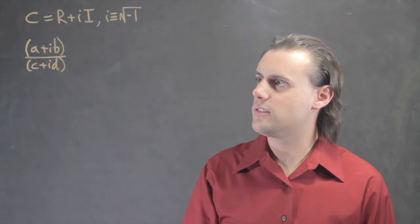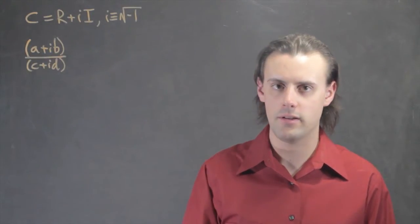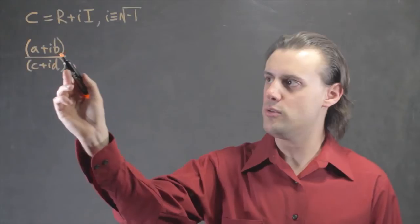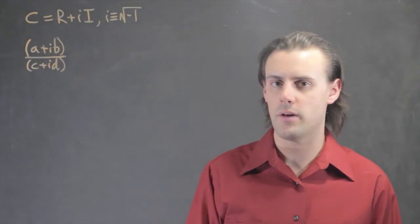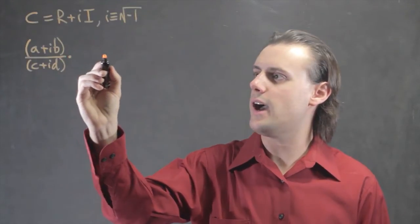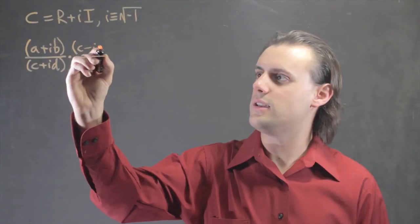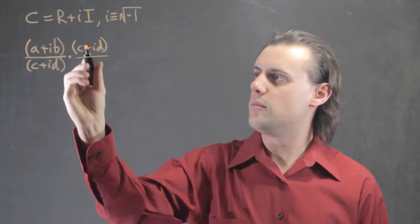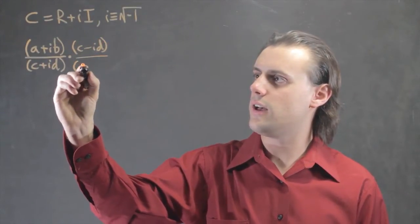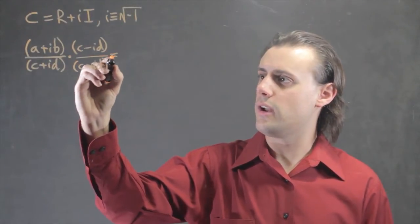To get this quotient in standard form, the first step is to multiply both the numerator and the denominator by the complex conjugate of the denominator. So I'm going to have c minus id multiplied with the numerator and also with the denominator.